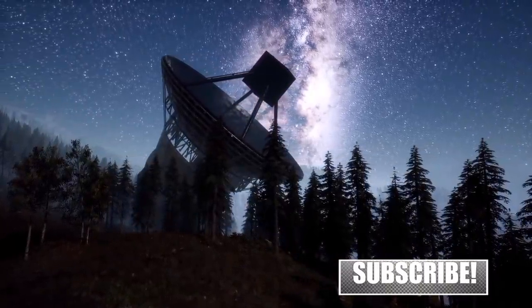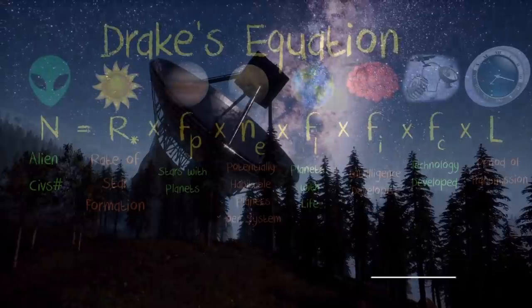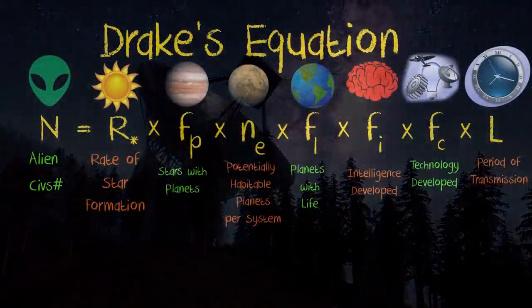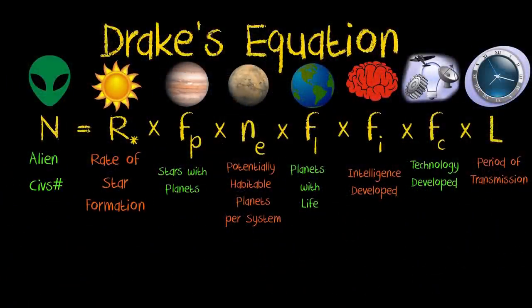The Drake Equation is essentially a formula for calculating how many alien civilizations there ought to be in our galaxy right now. Today we will look at that equation and plug in some known numbers, but we'll also highlight problems with the equation and assumptions it can lead to.